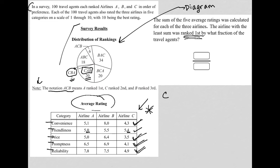So it was ranked first by 22 out of the 100 travel agents and we could reduce that to 11 out of 50. How did I get that? I just divided by two. I reduced that fraction. So 11 out of 50 is the correct answer here.